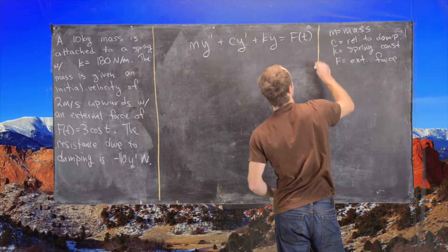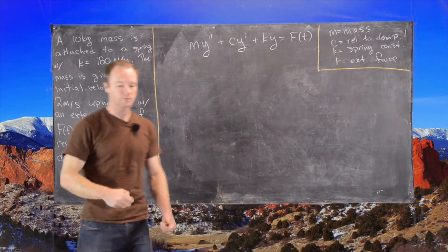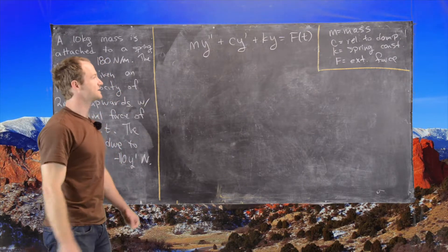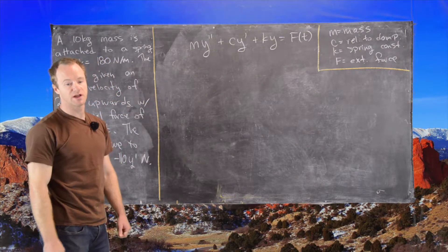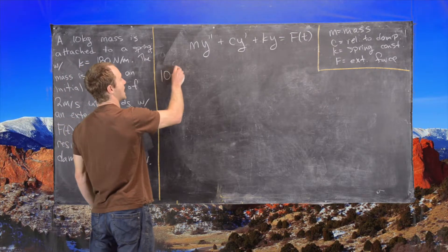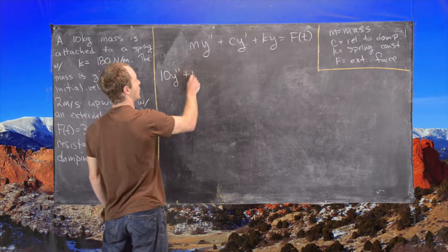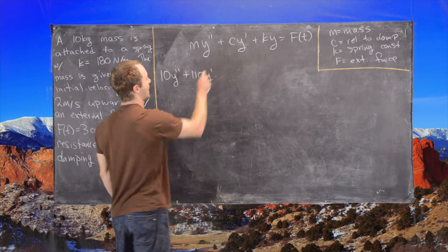So we have all of these parts in this problem. So let's go ahead and write down the differential equation and then get to solving it. So that means we have 10 y double prime plus 110 y prime.